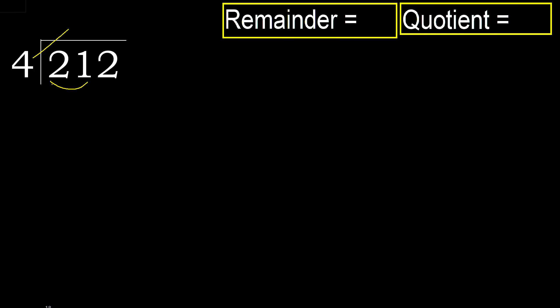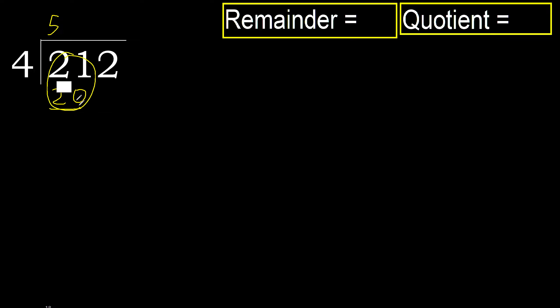24 is greater. 4 multiplied by 5 is 20. 20 is not greater, ok. Subtract, next.